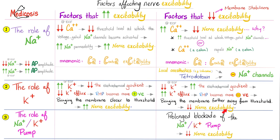Three factors affect nerve excitability: the role of potassium, the role of sodium/calcium, and the sodium-potassium ATPase pump. Hyperkalemia decreases the electrochemical gradient, decreases potassium efflux, makes the resting membrane potential more positive, bringing the membrane closer to threshold — increasing nerve excitability. Hypokalemia decreases nerve excitability. Both hypokalemia and hyperkalemia can cause arrhythmia because cardiac excitability is disturbed either way.